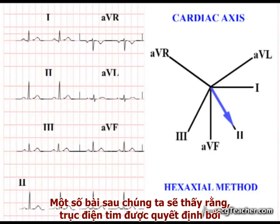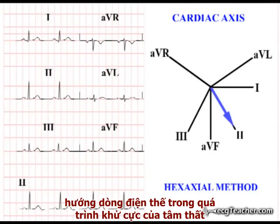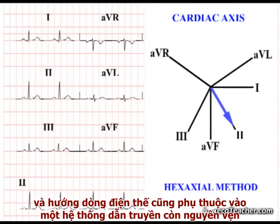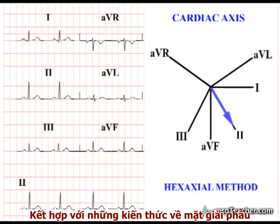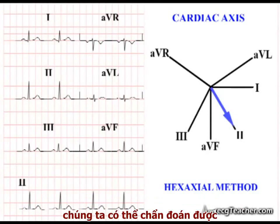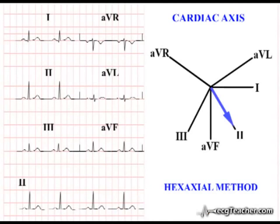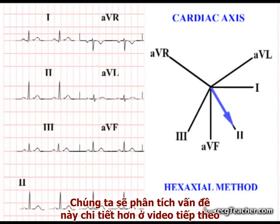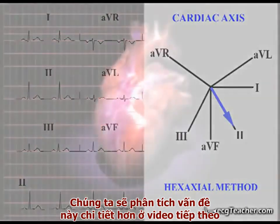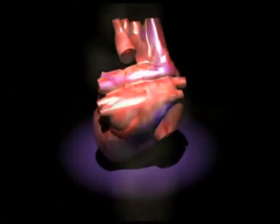As we'll see shortly, the cardiac axis is determined by the pattern of flow of depolarization in the ventricles, and this in turn is determined by an intact ventricular conducting system. Combined with a little anatomical knowledge, we can diagnose disease by detecting shifts in the position of the cardiac axis. We'll now explore this area in more detail in the videos which follow.